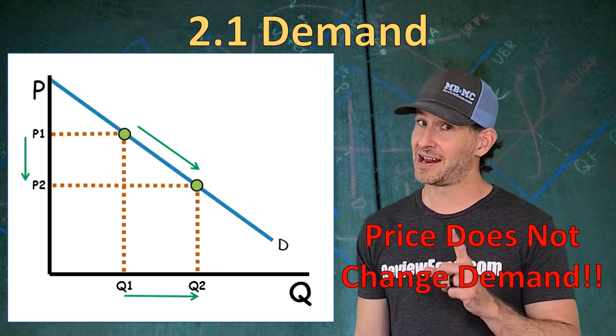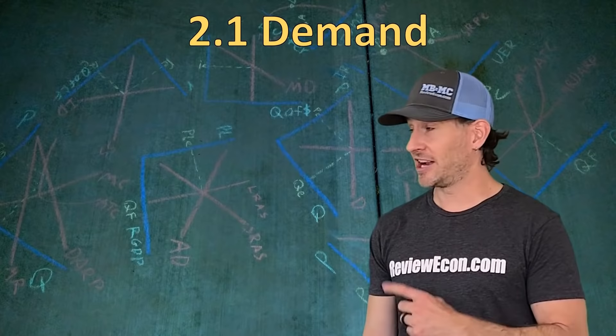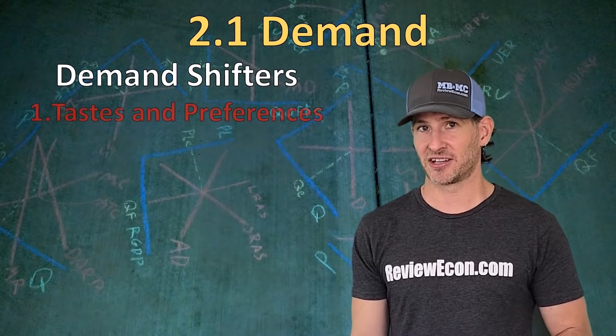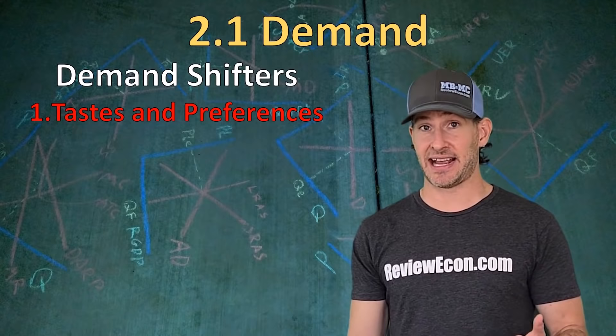It's a key thing that pops up over and over again and will trick you if you aren't paying attention. Price changes quantity, not demand. There are some things besides price that do shift demand curves — these are our non-price determinants of demand, or demand shifters. First, we've got tastes and preferences. When there's an increase in consumer tastes, it will shift our demand curve to the right, increasing demand.